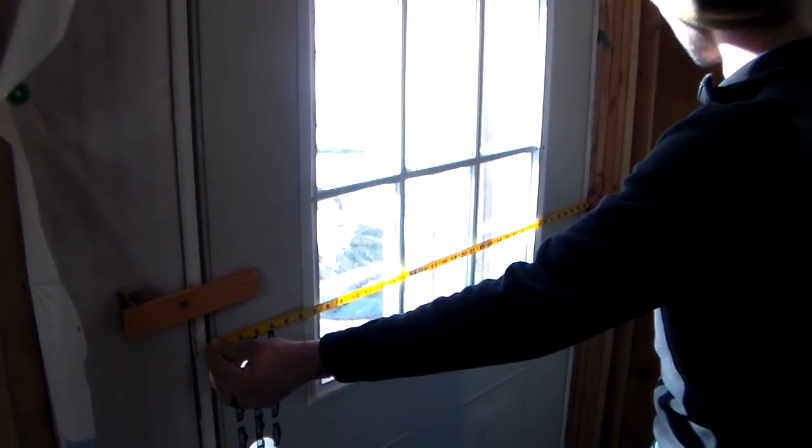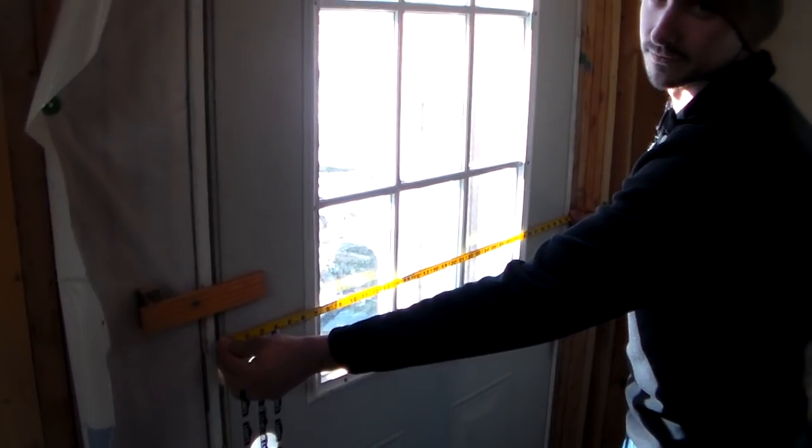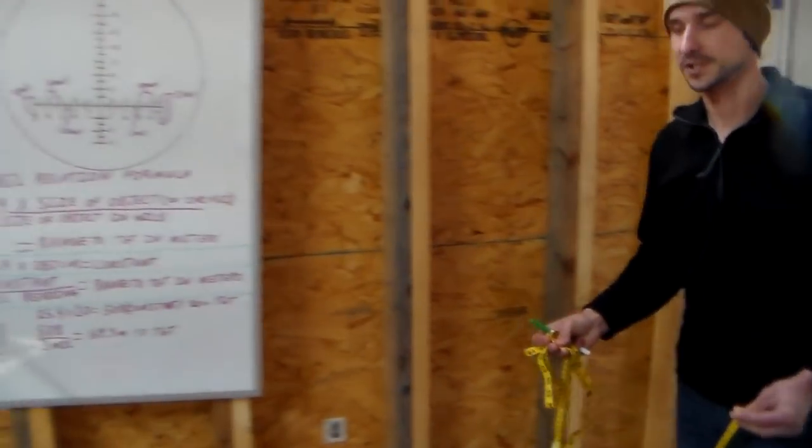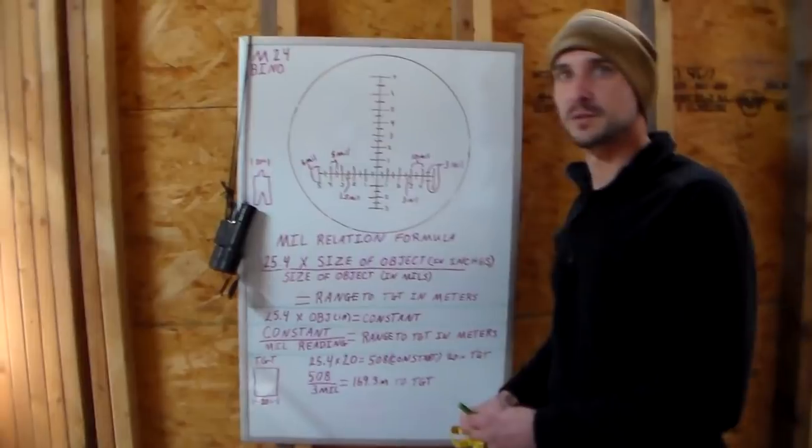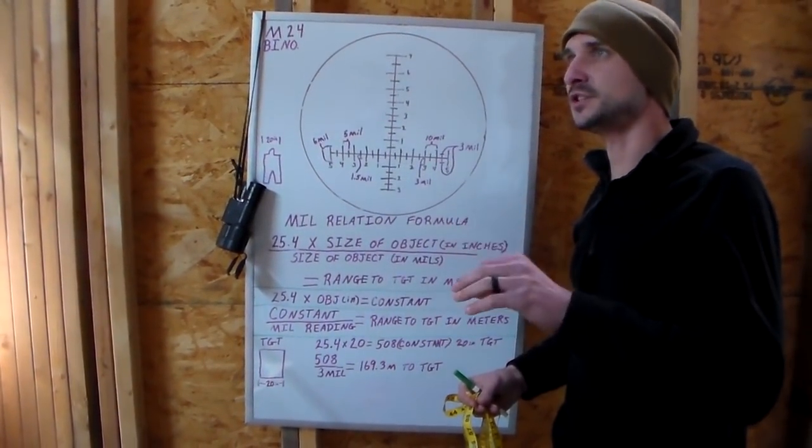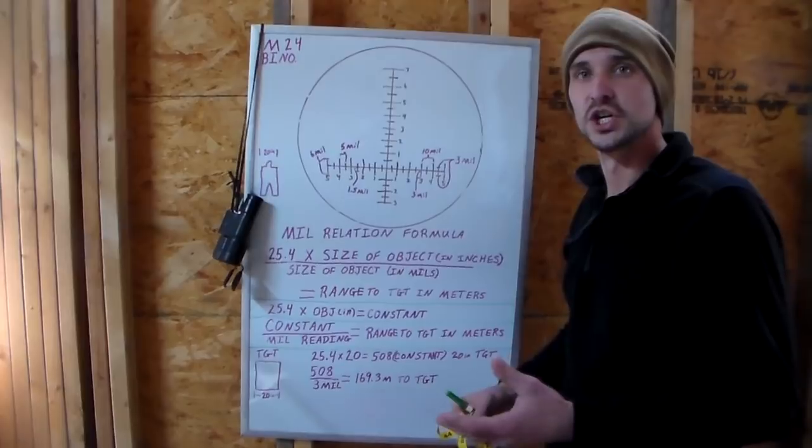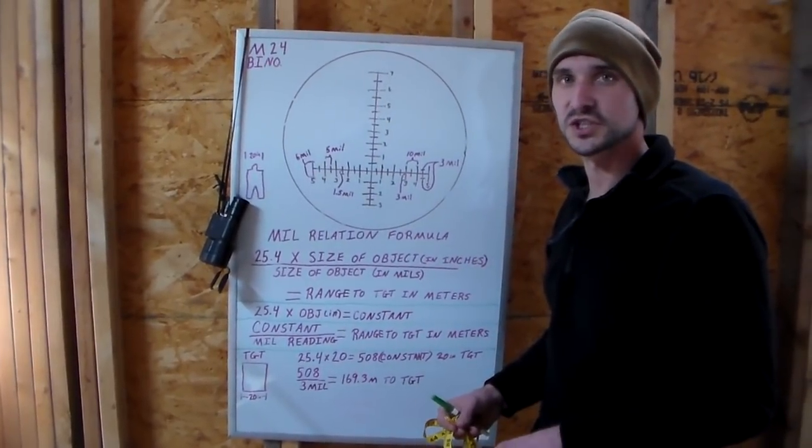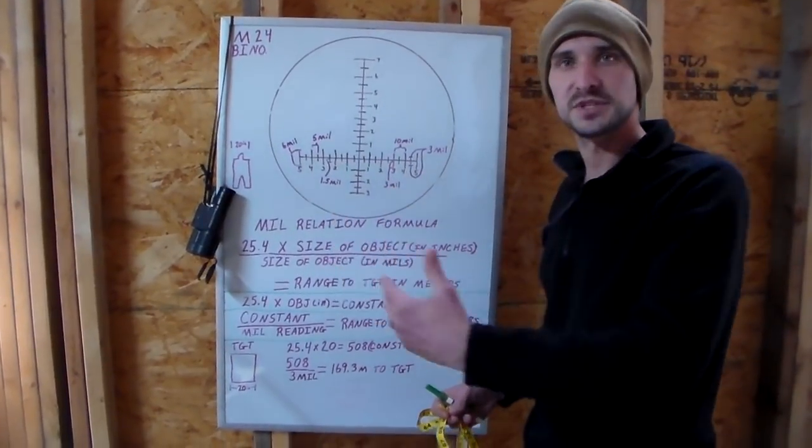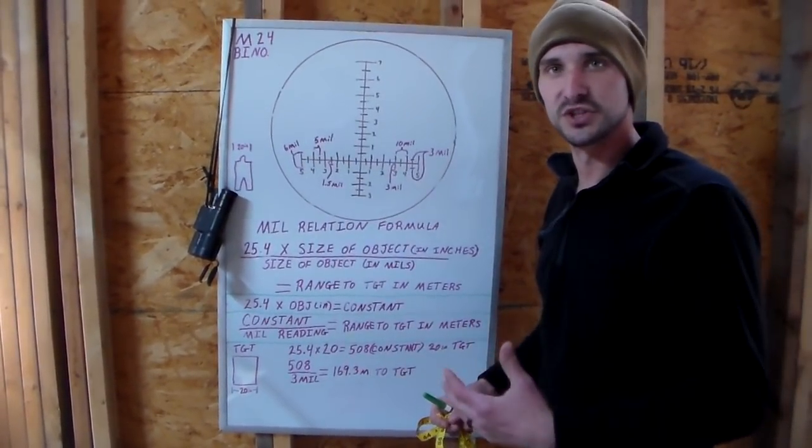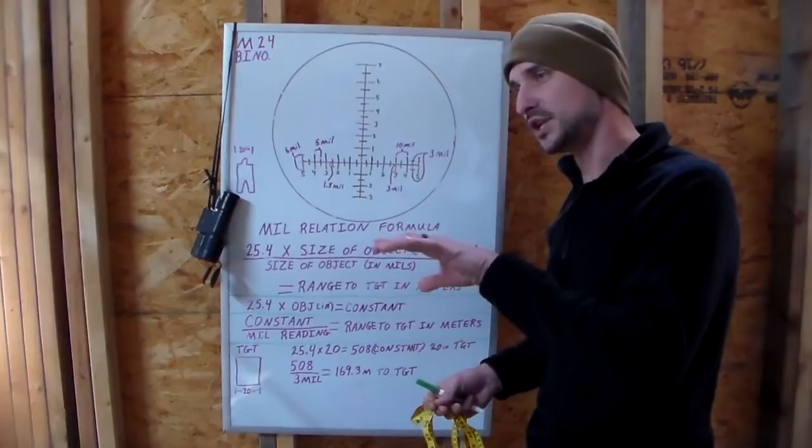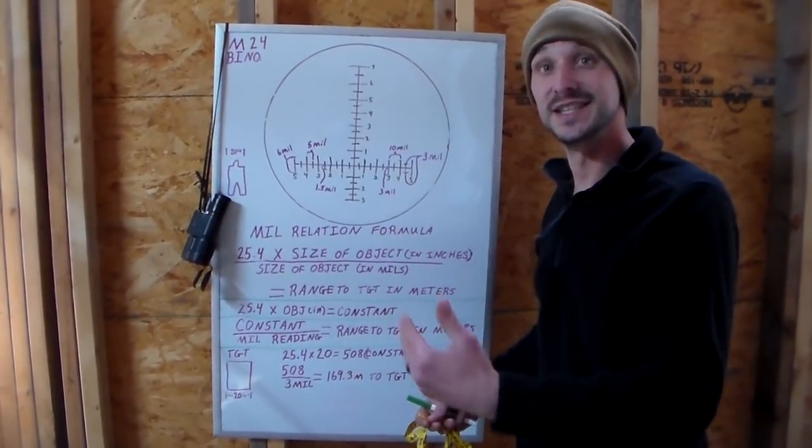So you know that most common doors are 36 inches wide. Write this down in your notebook. Keep this information. Measure stop signs in your area. Measure any features that are common in your area so you can store those measurements. So if you're set up in a hide site and you have a stop sign out there or a building with a door, you already know the target measurement of that, and you can use that information to get the distance to it.